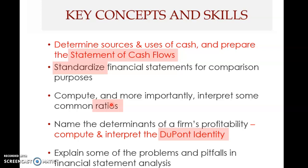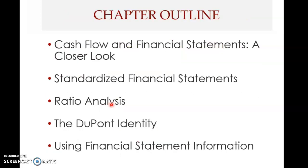The fourth key concept is the DuPont identity, widely known as the DuPont framework or DuPont analysis. It is a framework that brings together some of the common ratios. The fifth and final key concept is to explain some of the weaknesses or shortcomings in doing financial statement analysis or ratio analysis — the problems and pitfalls.